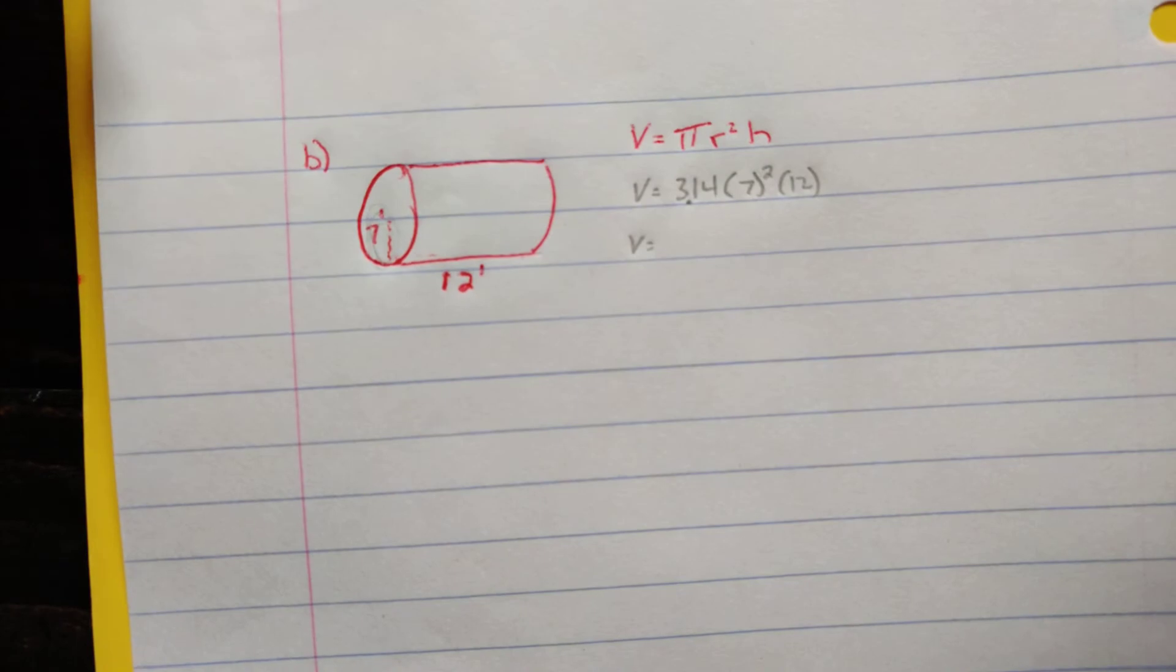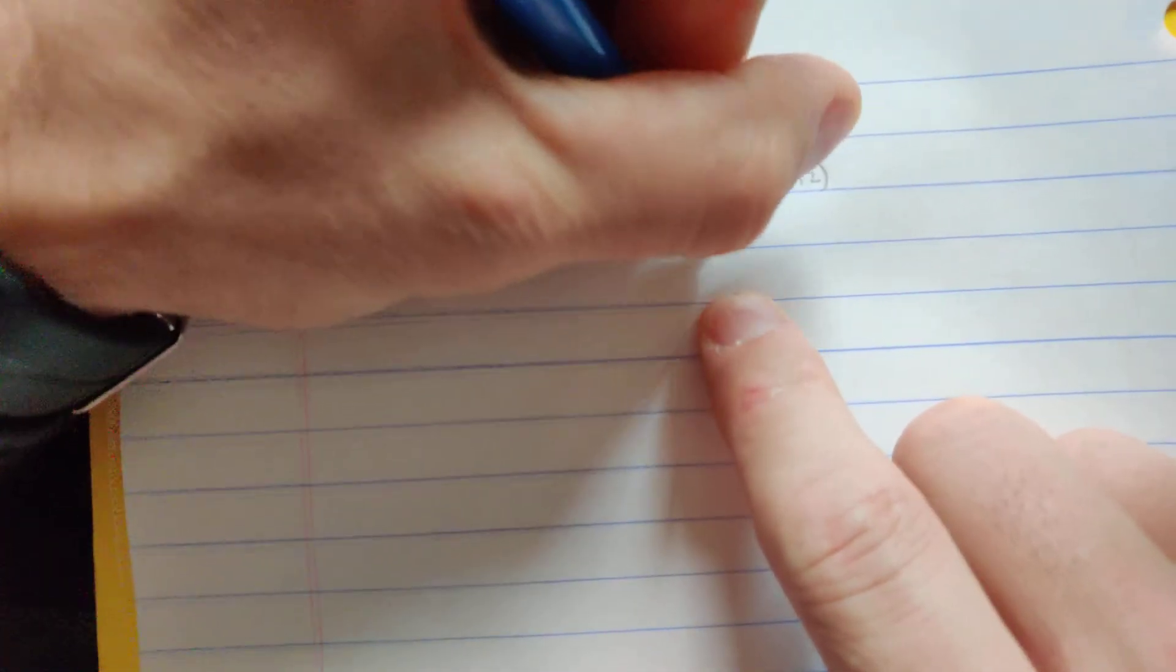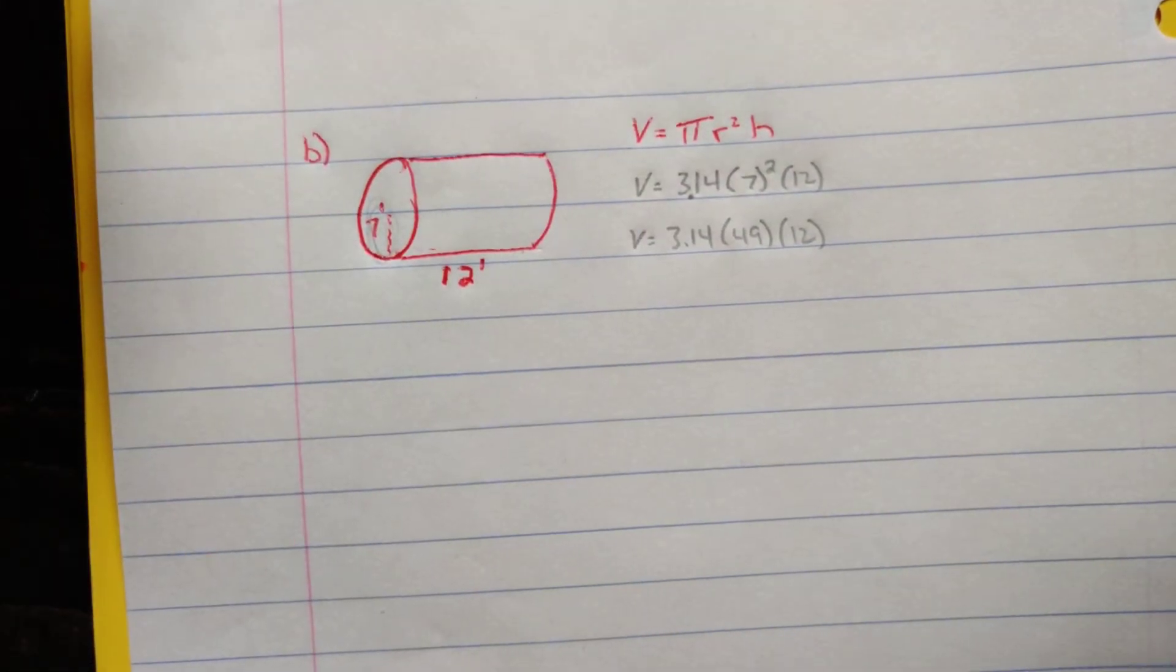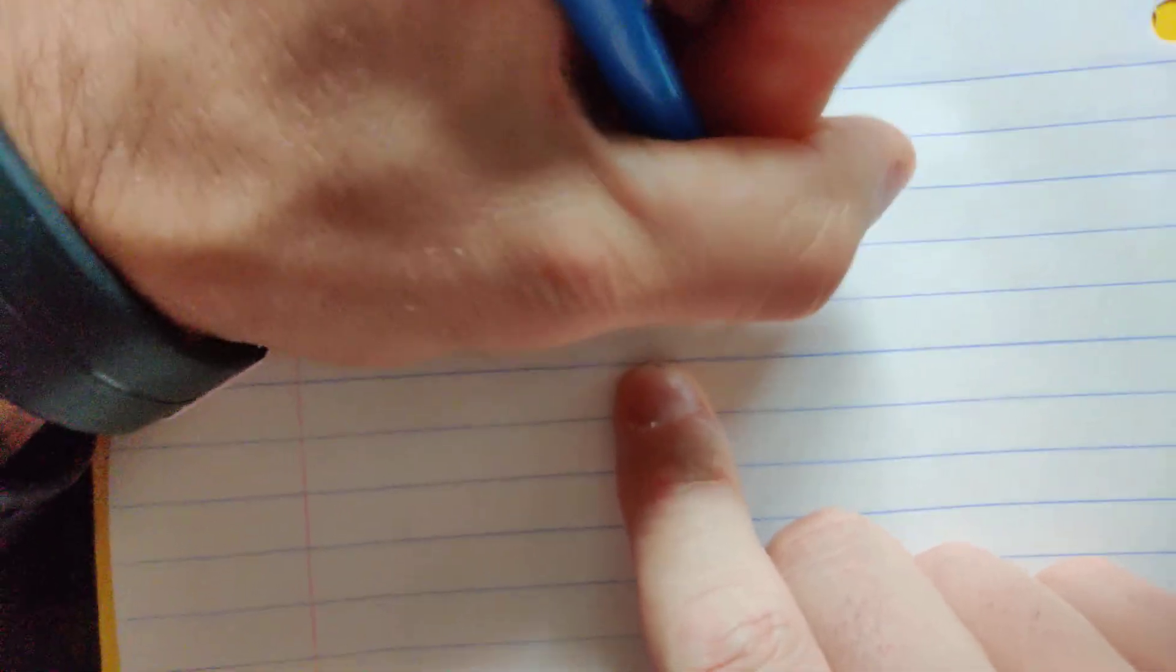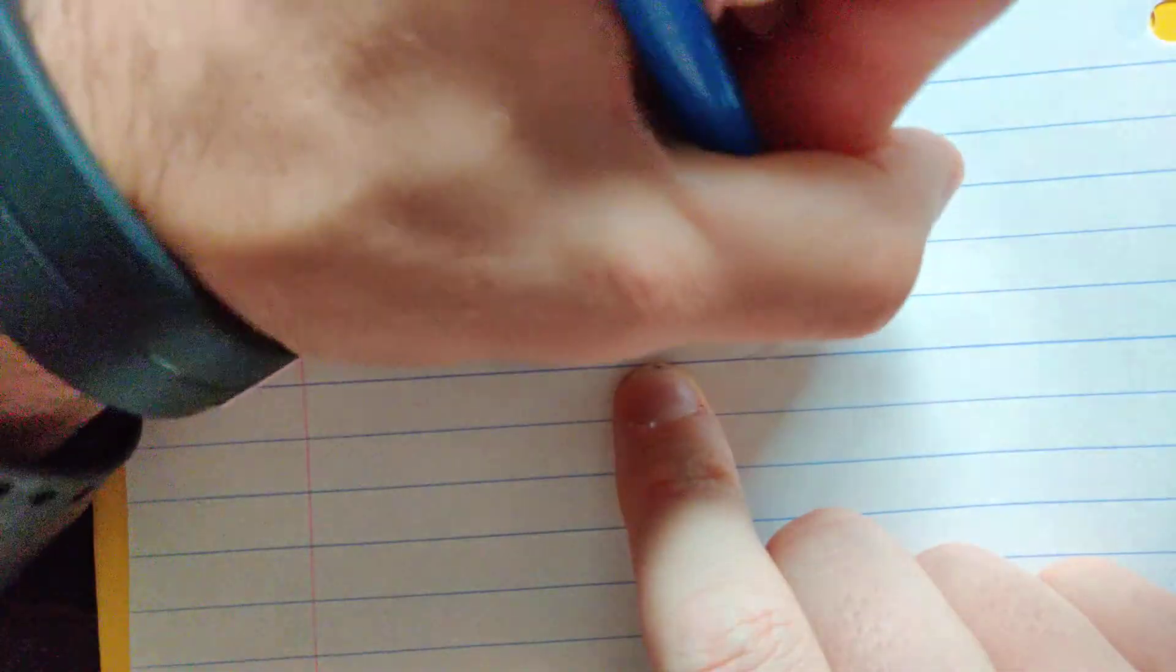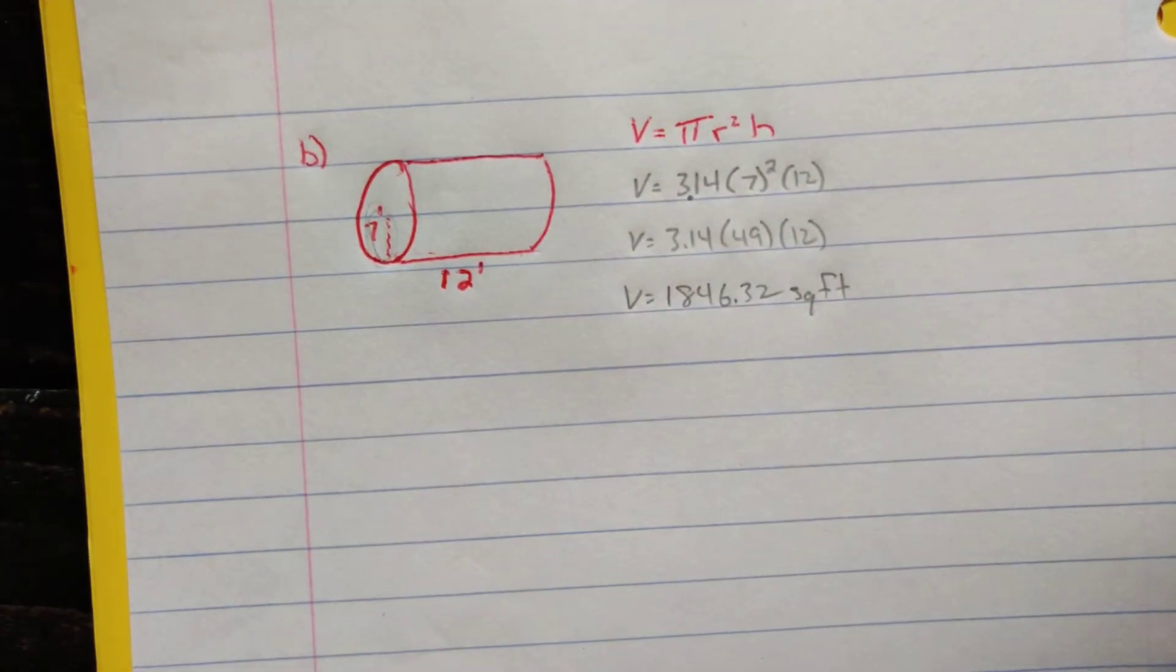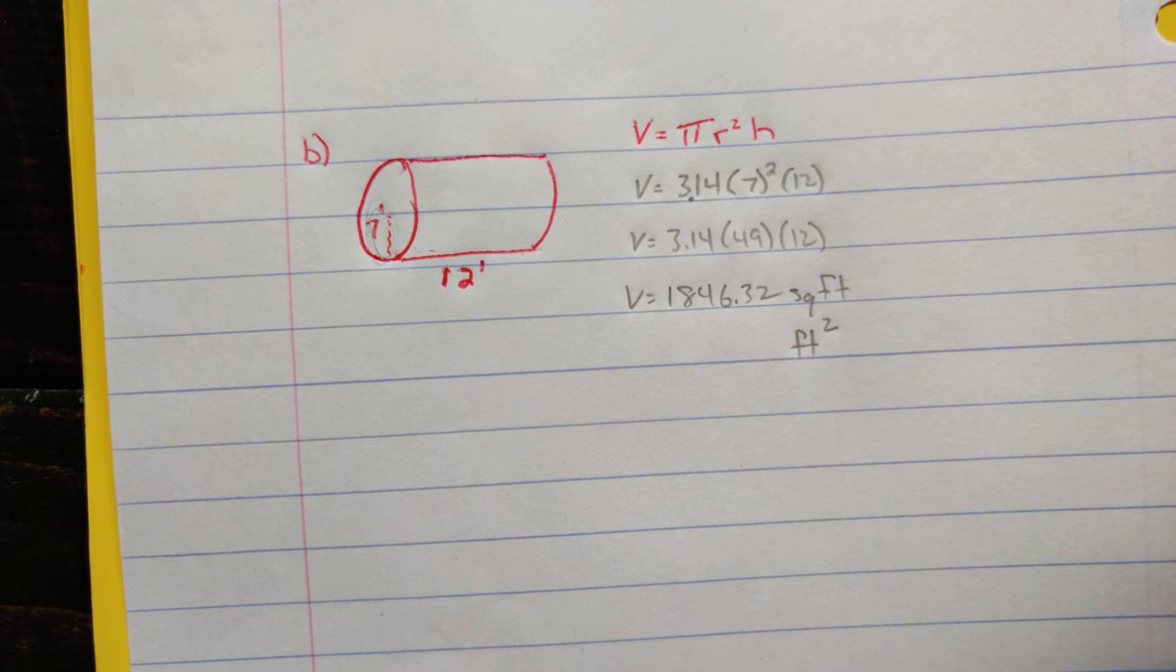And when we do that, we can type that all in your calculator or you can do seven squared first. If you do seven squared first, you're going to get 49 times 12. So 3.14 times 49 times 12 is going to give us 1,846.32. And that is going to be in square feet. Or you could write feet squared like that as well, your choice on the units.